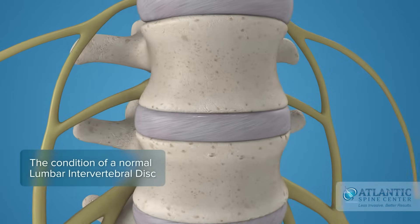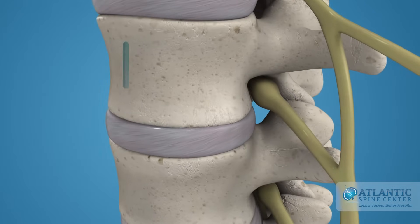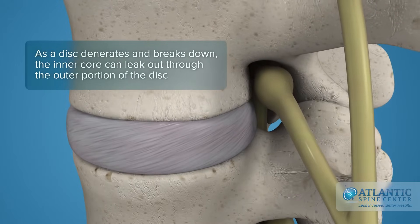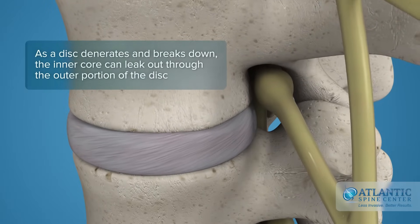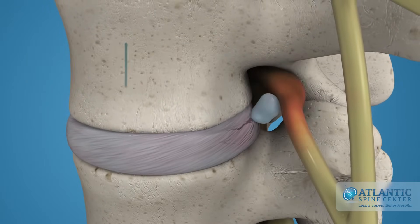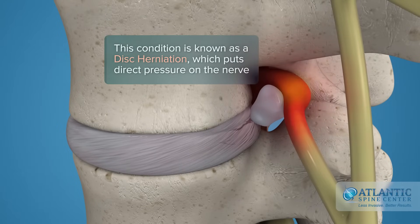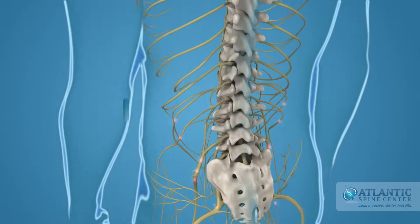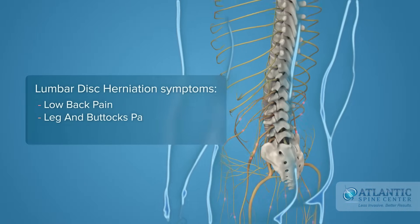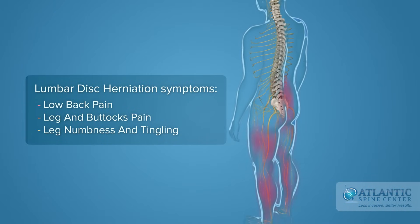This is the condition of a normal lumbar intervertebral disc. As a disc degenerates and breaks down, the inner core can leak out through the outer portion of the disc. This condition is known as a disc herniation, which puts direct pressure on the nerve. Lumbar herniated disc symptoms include low back pain, leg and buttock pain, and leg numbness and tingling.